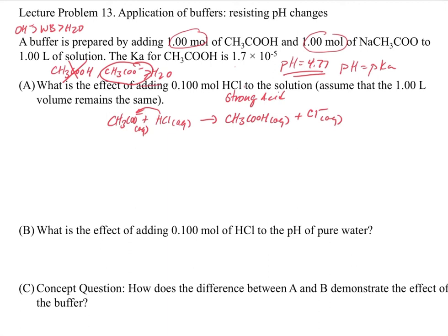No matter what happens when we add an acid, we know the eventual pH is going to go down. That makes sense because we're taking some A⁻ and converting it to HA, which shifts the balance to make more HA relative to A⁻. So our pH should go down at the end of this, and when we get our answer, that will make sense.